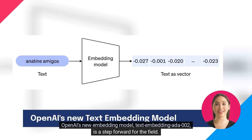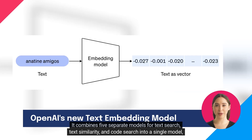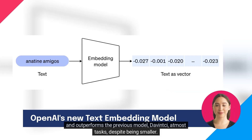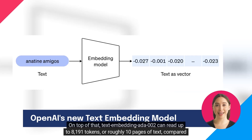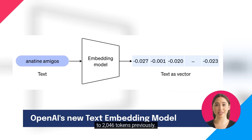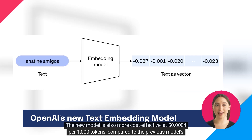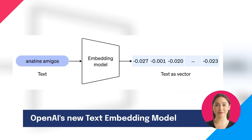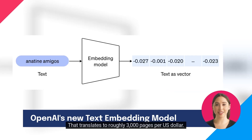OpenAI's new embedding model, Text Embedding Ada 002, is a step forward for the field. It combines five separate models for text search, text similarity, and code search into a single model, and outperforms the previous Davinci model at most tasks, despite being smaller. Text Embedding Ada 002 can read up to 8,191 tokens, or roughly 10 pages of text, compared to 2,046 tokens previously. The new model is also more cost-effective at $0.0004 per 1,000 tokens, compared to the previous model's $0.004 per 1,000 tokens — that translates to roughly 3,000 pages per US dollar.